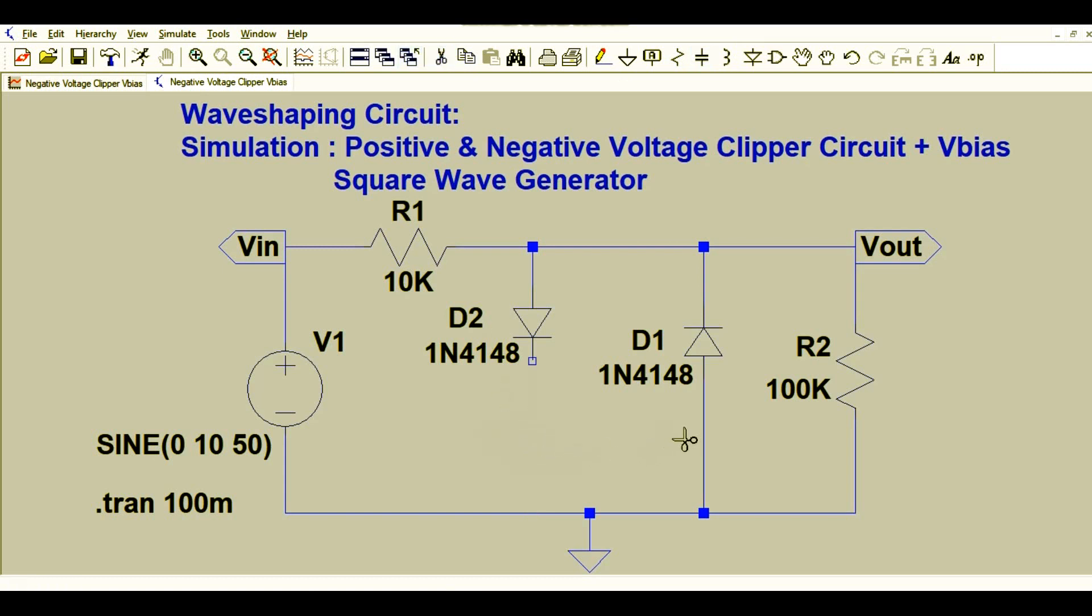I will add a voltage source here. Let's take a voltage source, connect it via wire. You have to rotate it, connect it via wire. This is 3.3 volts. Let's arrange it.